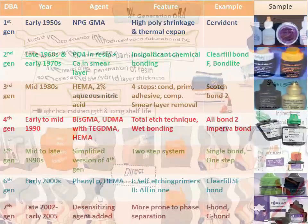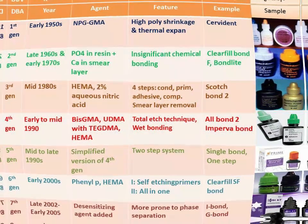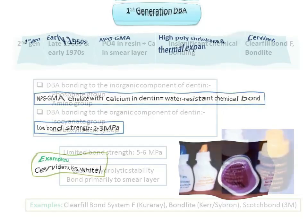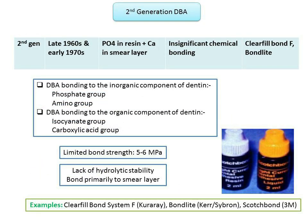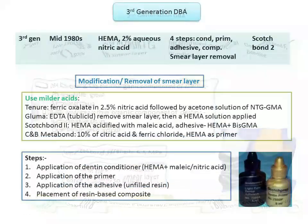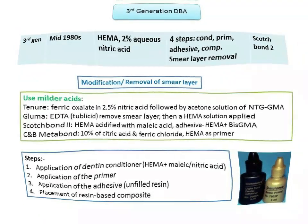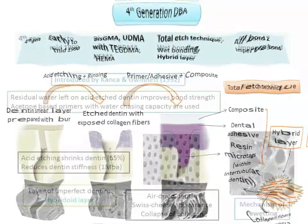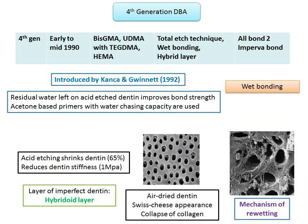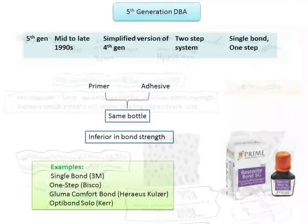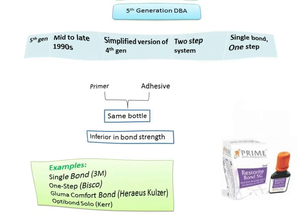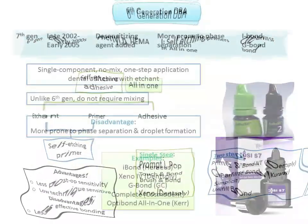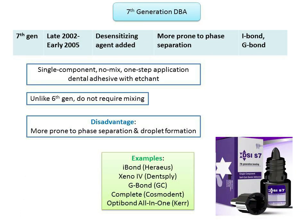Dental bonding agents have advanced greatly over the last two decades and can now provide predictable bonding to enamel and dentine. The mechanism of bonding is primarily micromechanical by the formation of a hybrid layer. The various advances in adhesive technology have expanded applications to include bonding of composites, ceramics, as well as metallic restorations, and can be used successfully under foundation to tooth structure.